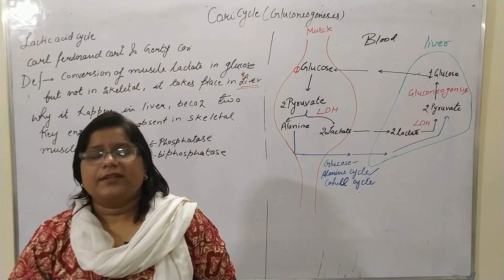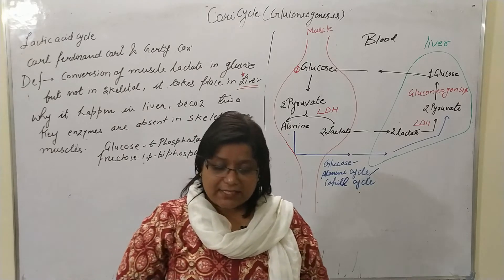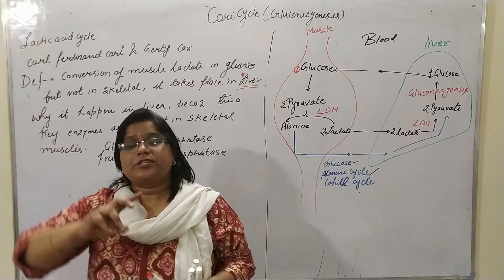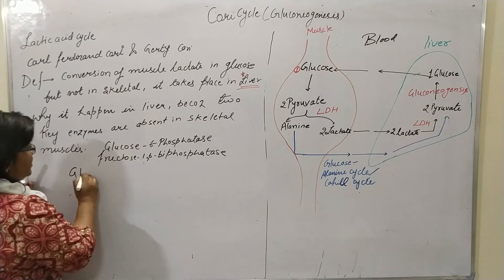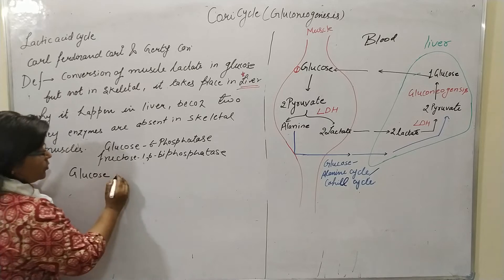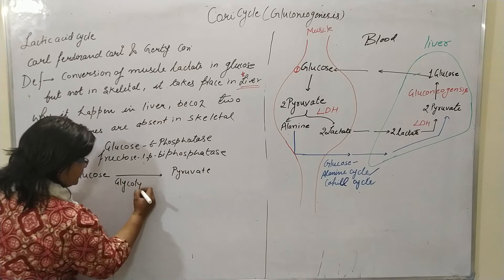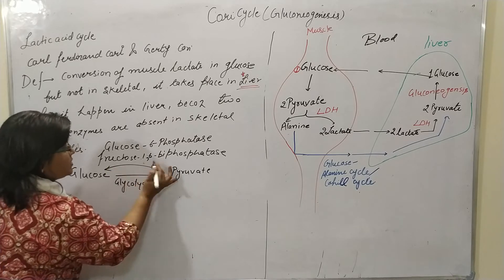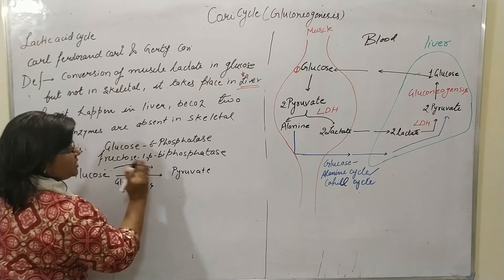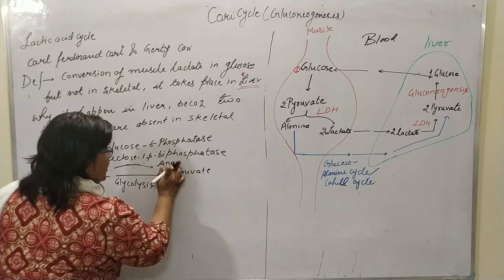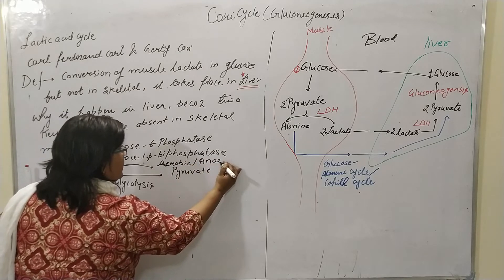The main question is: why is lactic acid generated in skeletal muscle? To answer this, we look at glucose oxidation. Glucose is converted into pyruvate through glycolysis, and for glycolysis no oxygen is compulsory — it can happen under both aerobic and anaerobic conditions.